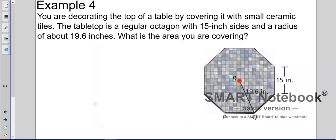You're decorating the top of a table by covering it with small ceramic tiles. The tabletop is a regular octagon with 15-inch sides. Notice we saved ourselves a little trouble because we can figure out the perimeter right off the bat: 15 times 8, which is 120. So we already know the perimeter. We don't have to do any trigonometry to find it. We already know the perimeter. This is one of our steps right here.